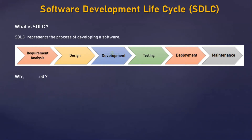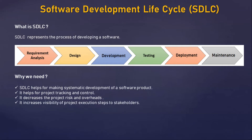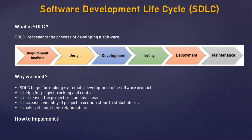Why do we need SDLC? SDLC helps for making systematic development of a software product and it also helps us for project tracking and control. It decreases project risk and overheads, increases visibility of project execution steps to stakeholders, and it makes for strong client relationships.